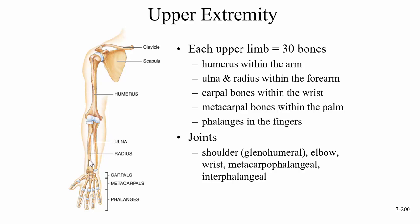The radius is on your thumb side; the ulna is on your little finger side. A memory aid: little finger has an 'L' in it, and ulna has an 'L' in it. In the wrist we have carpal bones, the palm contains the metacarpals, and the fingers are the phalanges.